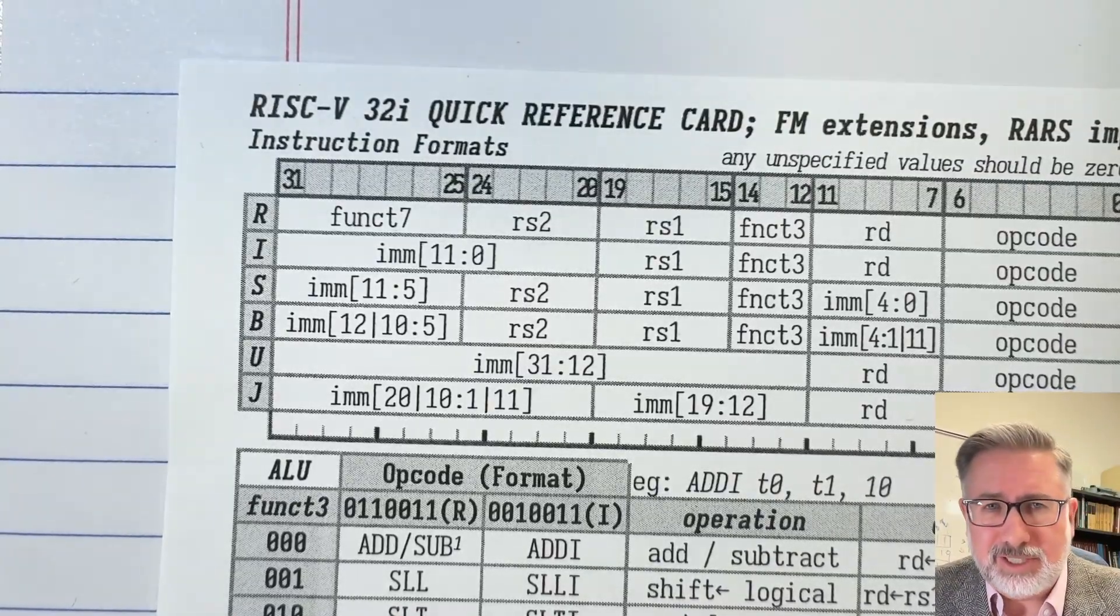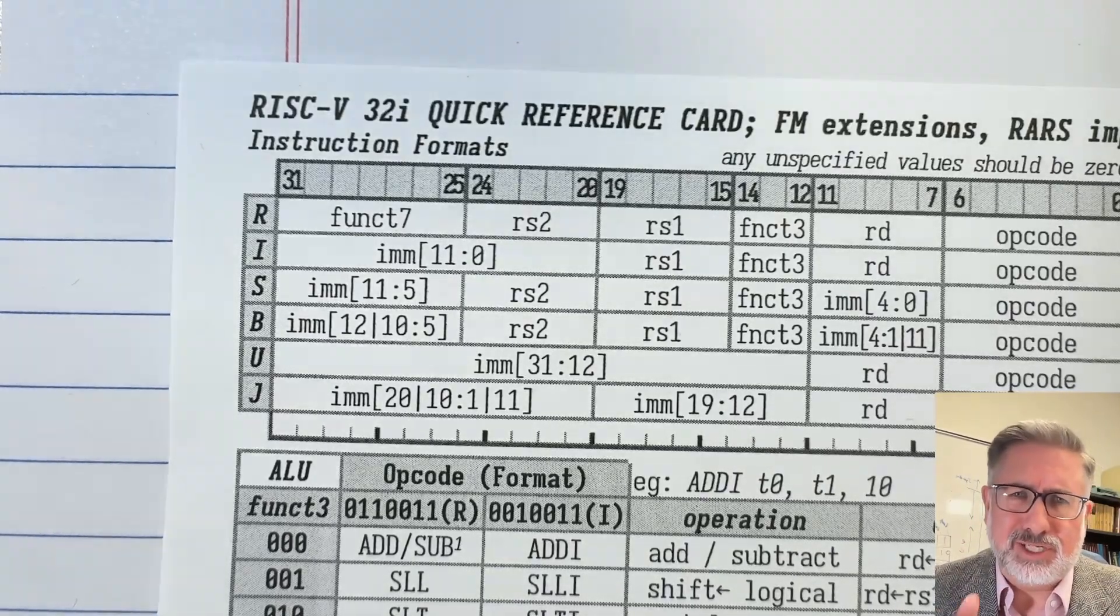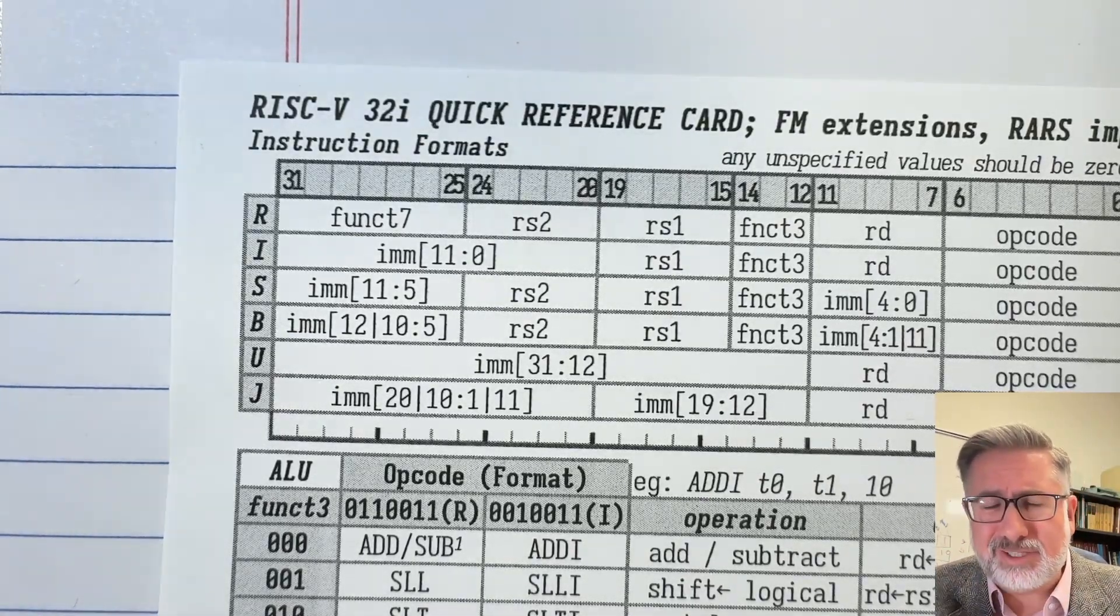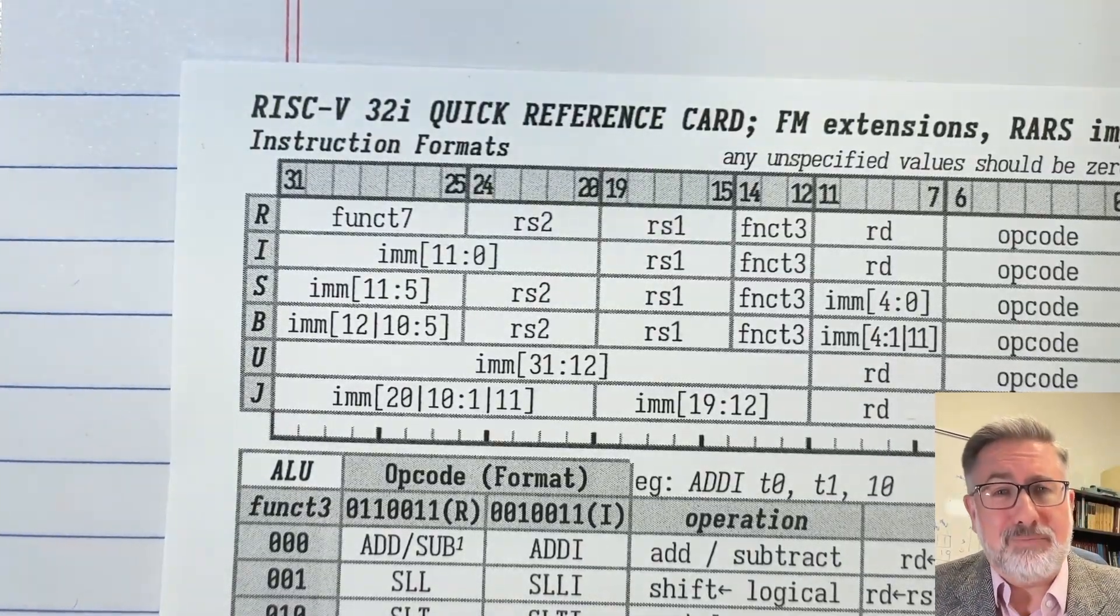32 is a nice sort of balance because for a three-register format with 32 registers, it takes five bits to represent a register to choose one of the 32 registers that's in the register file. And if you're going to use three registers, that's 5, 10, 15, that's about half of the instruction, the other half is for opcodes and other things. So that's not a bad balance.